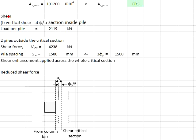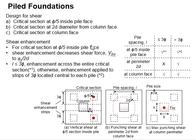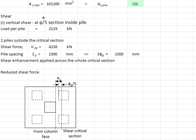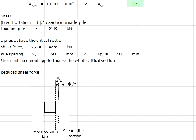First we design for the critical sections. The shear loads will be those from piles outside the critical sections, meaning the reactions caused by those pile loads. First we need to determine the load per pile, which is determined by dividing the ultimate axial load by four units of pile, giving 2119 kilonewtons.